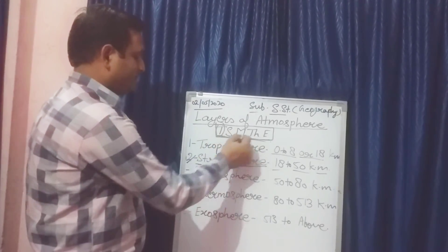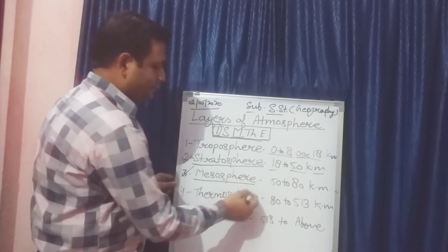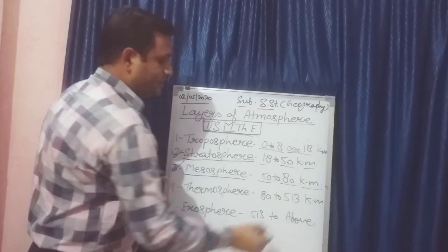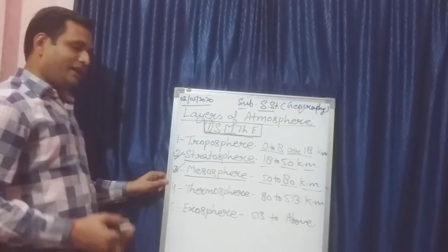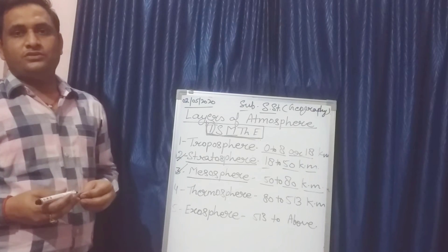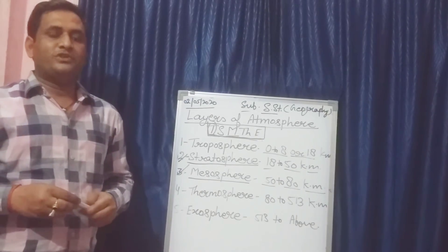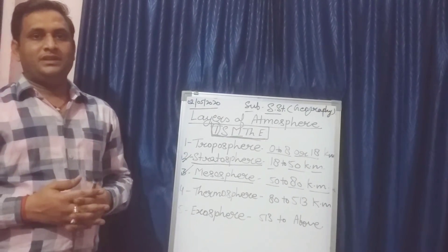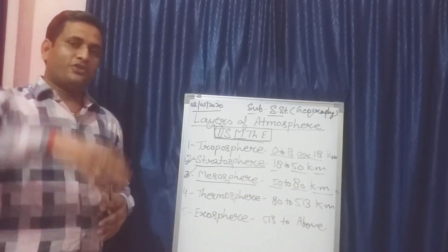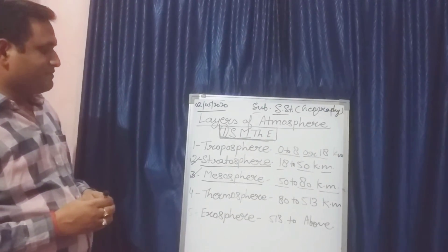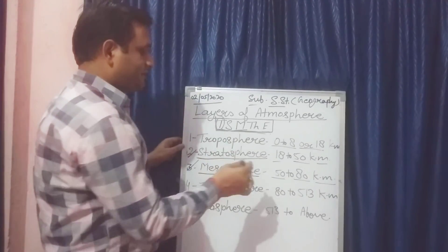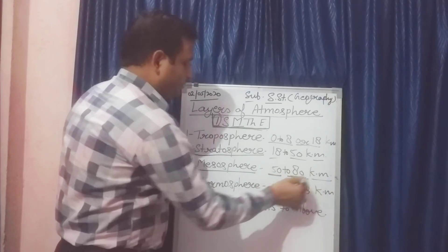After Stratosphere comes M — Mesosphere. Mesosphere is from 50 to 80 kilometers. As the number of kilometers increases, there is also a change in the atmosphere — the gases are changing, and we are moving further away from our Earth.